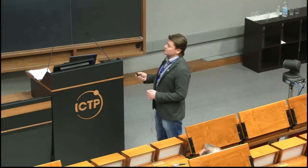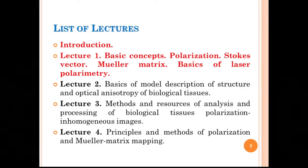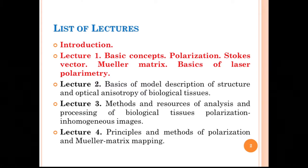The list of lectures — it will be one lecture with four directions, including the introduction. The first direction covers basic concepts of polarization, Stokes vector, Mueller matrices, and basics of laser polarimetry. The second covers basics of model description of structure and optical anisotropy of biological tissues. The third covers methods of analysis of polarization inhomogeneous images. The fourth covers principles and methods of polarization and Mueller matrix mapping.